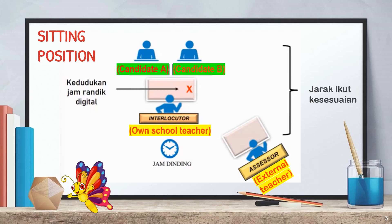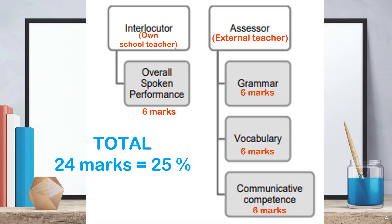Therefore, candidates are advised to try practicing the speaking test using any model or sample speaking questions. Keep track of your speaking timing and be prepared before the test. The interlocutor manages the interaction during the test by asking questions and giving instructions, and assesses the candidates using the overall spoken performance assessment skill. On the other hand, the assessor assesses the candidate's performance using analytical assessment skills like grammar, vocabulary, and communicative competence. The details about the assessment skills will be explained later.